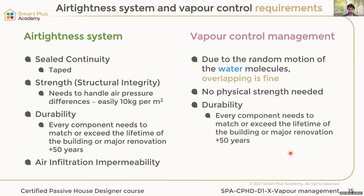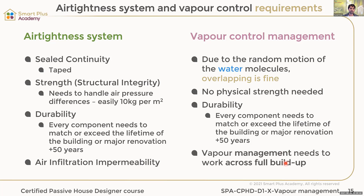Durability is needed — 50 years plus. Vapor management needs to work across the full buildup. Air tightness is only at one layer, maybe a secondary one, but it's one layer — a leaky bucket in a leaky bucket is still a leaky bucket. The vapor control needs to be managed through the whole buildup, so the vapor resistance of the different materials must be designed to avoid any point of condensation.